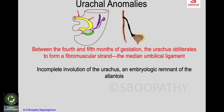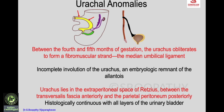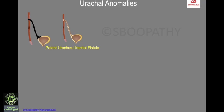Incomplete involution of the urachus results in an embryologic remnant of the allantois. The urachus lies in the extraperitoneal space of Retzius, between the transversalis fascia anteriorly and the parietal peritoneum posteriorly, and is continuous with all layers of the urinary bladder. Urachal anomalies include patent urachus (urachal fistula) between the bladder and umbilicus, or a urachal cyst along the urachal tract.